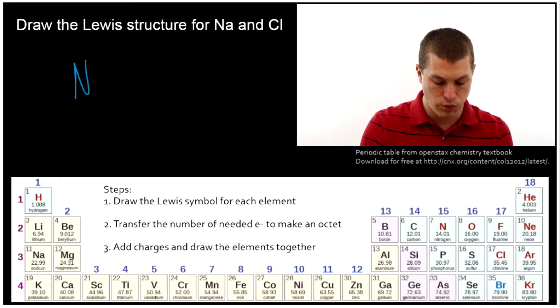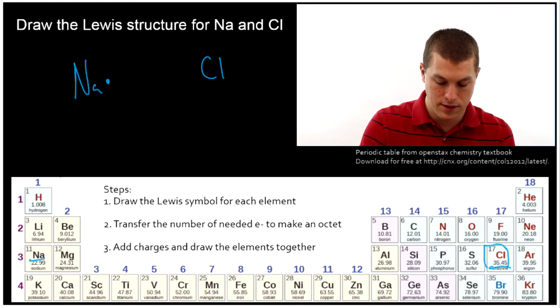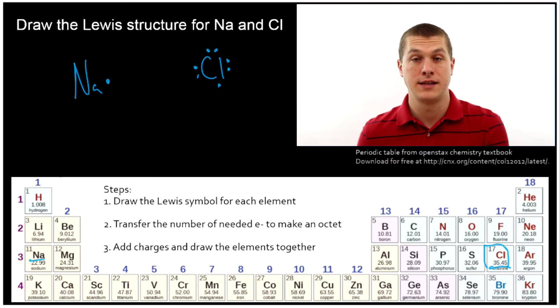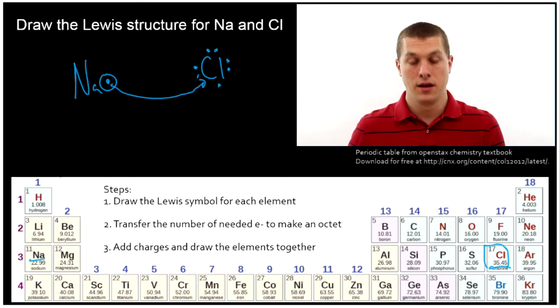Sodium has just one valence electron, so it gets one dot there. Chlorine on the other hand, way over here in the seventh box, is going to have seven valence electrons. One, two, three, four, five, six, seven. They both want to have eight, an octet. And so sodium can pass off an electron to chlorine, and then chlorine will have an octet and be quite stable.